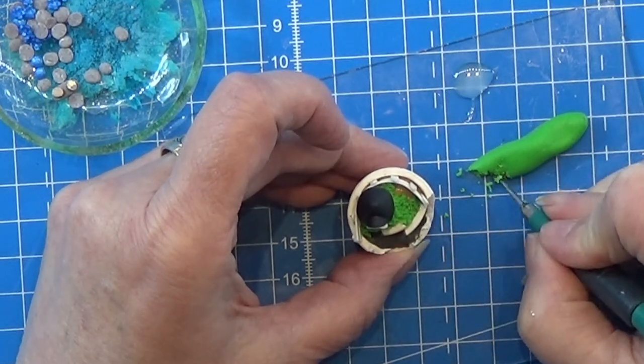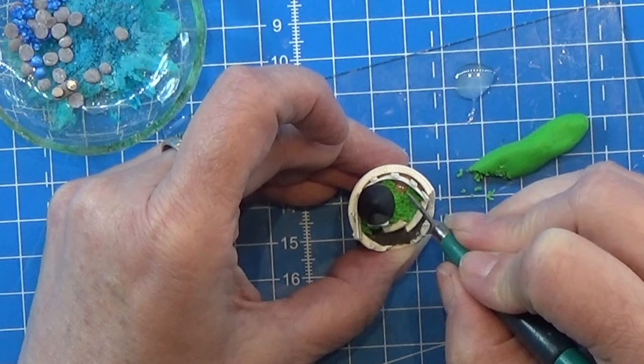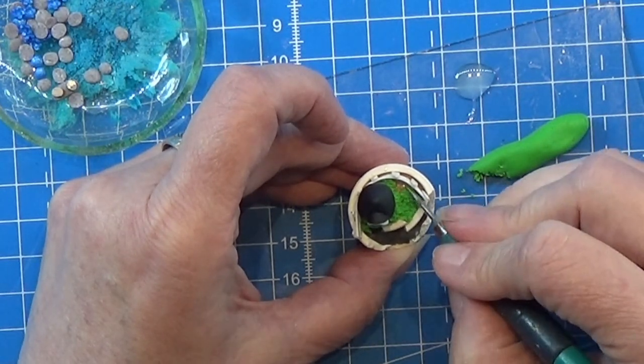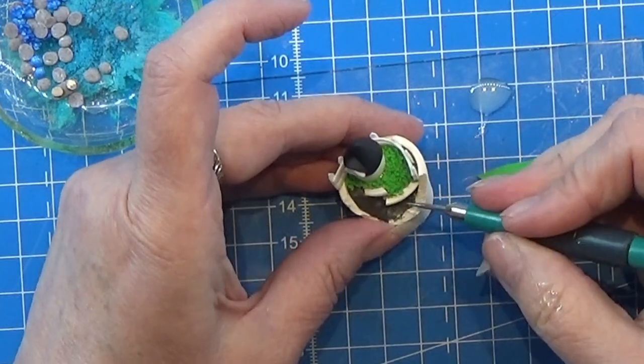I shaped it around the edge of the pot and I am putting the grass in between and down so that you don't see the brown pieces of it.